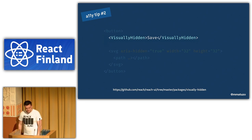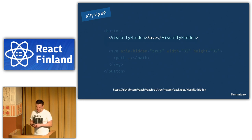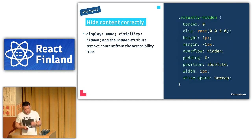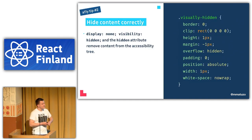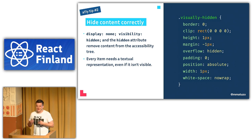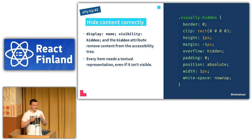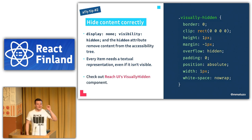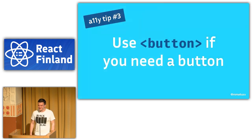You can also use an existing component from the Reach UI React library that does exactly that. In summary: don't use display:none, visibility:hidden, or the hidden attribute if you want everyone to access the content. Keep in mind that every item on your page needs some kind of textual representation — if you have a button with just an icon, it must also have a text equivalent.